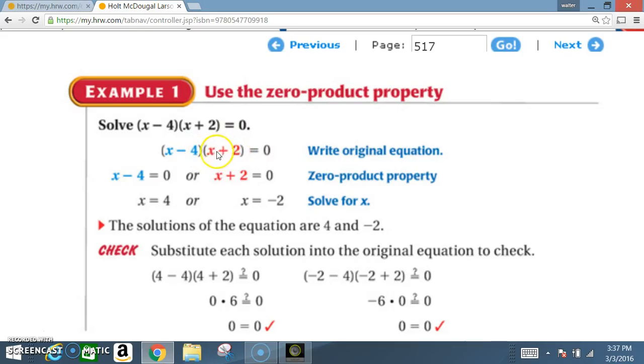Example 1: Use the zero product property. Solve (x - 4)(x + 2) = 0. First we write the original equation, then we apply the zero product property: x - 4 = 0 or x + 2 = 0, and then we solve each for x.